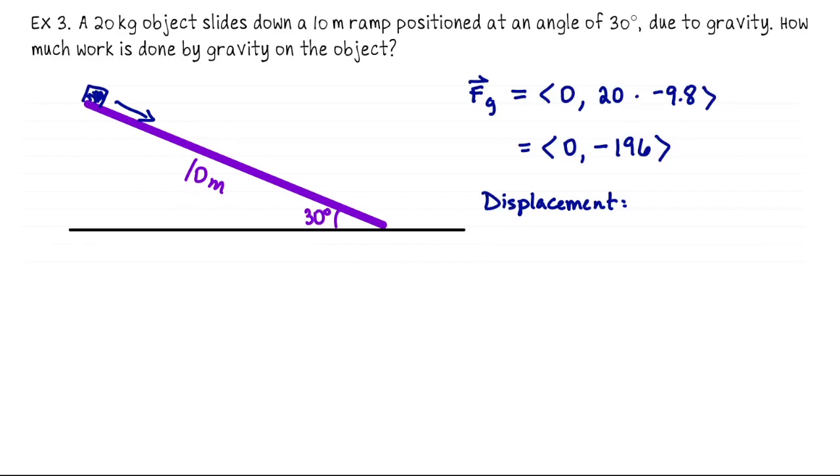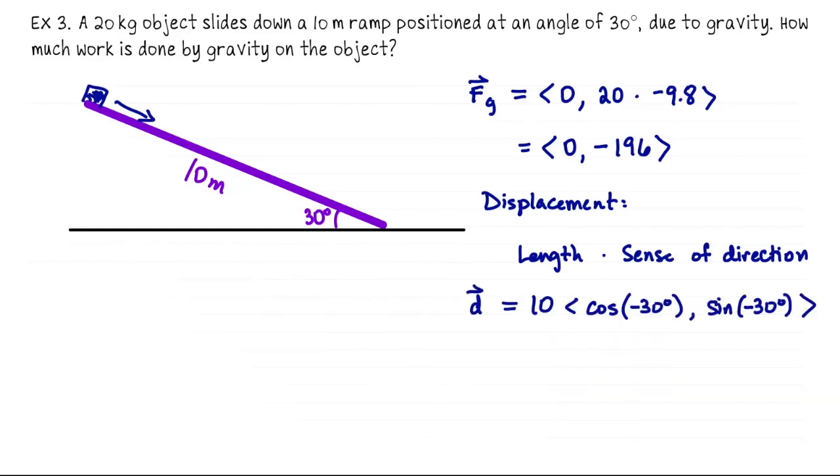For displacement, once again, I'm going to use that principle that you can take any vector and write it as the product of its own magnitude times the unit length vector pointing in the same direction. How far did we travel? Ten meters total, but at an angle. So the length of the displacement is ten meters, but it's not ten meters straight to the right or anything like that.